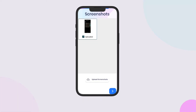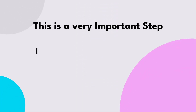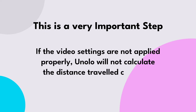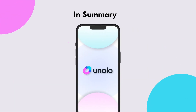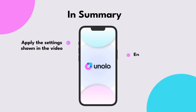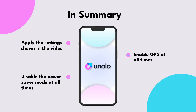This is a very important step. If the video settings are not applied properly, Unolo will not calculate the distance traveled correctly. In summary: apply the settings shown in the video, enable GPS at all times, and disable the power saver mode at all times.